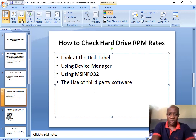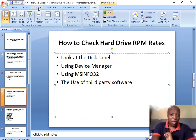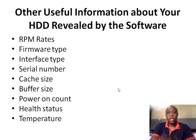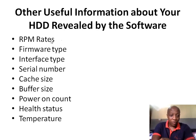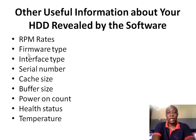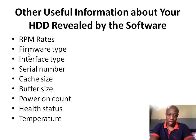The advantage of using third-party software over the other methods is that they display additional information which is very beneficial. Besides RPM rates, you can also see the firmware type, interface type, serial number, cache size, buffer size, power-on count, health status, and temperature. These are all extra details you can find by using third-party utility software.